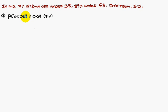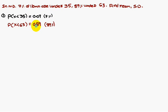The given data: the probability of x less than 35 is 0.07 — that is nothing but 7%. And x less than 63 is 0.89.